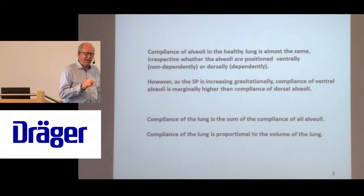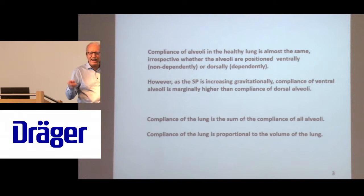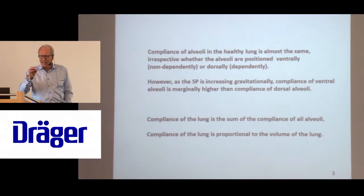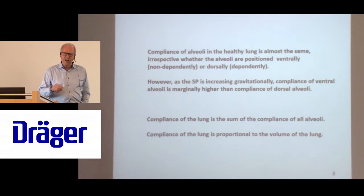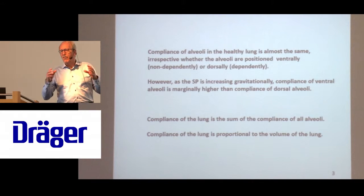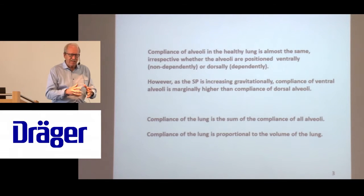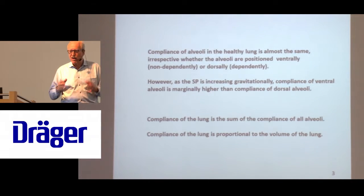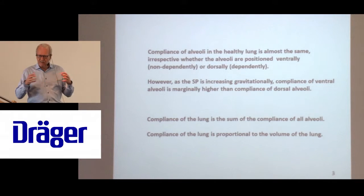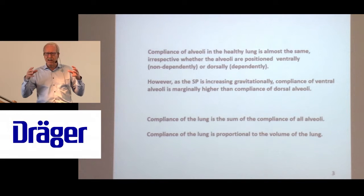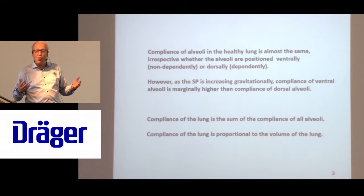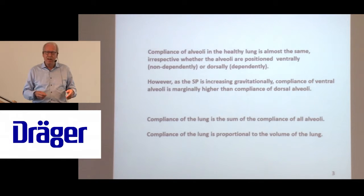In a healthy lung, the compliance of the alveoli are almost equal anywhere in the lung. Whether they are ventral or dorsal or lateral, on the left or right, each alveolus has about the same compliance, and the total compliance is the sum of all the compliances of all the alveoli. If you have a rat lung it has a very low compliance, but it's perfectly normal for a rat. And if you have an elephant's lung, the sum of the compliance of all the alveoli is much bigger - so looking at a human being we would call it emphysematic, very very high compliance.